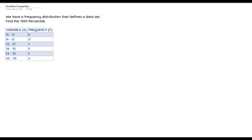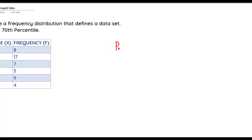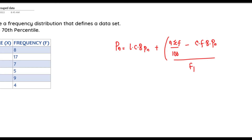The first step is to state the formula for the nth percentile of a grouped data. That is: P_n = LCB_(P_n) + [ (n × ΣF / 100) − CFb_(P_n) ] / F_(P_n) × c. This formula helps us get the nth percentile of our data set.